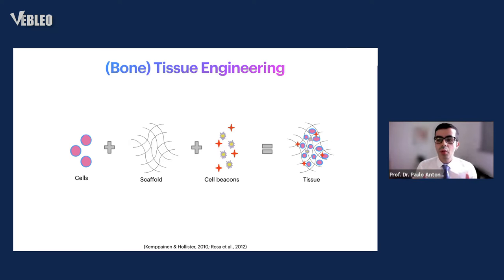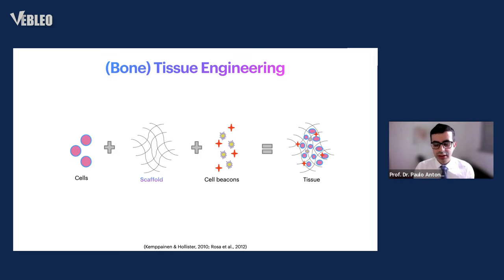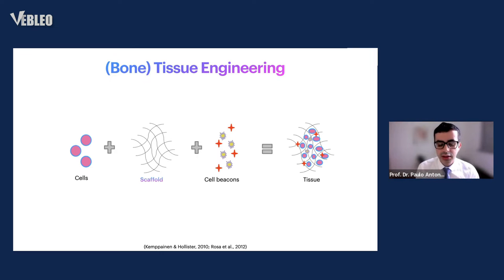In a simplistic way, to achieve bone tissue engineering or tissue repair and regeneration, we need three elements: cells, scaffolds, and signaling molecules. And where carbon nanotubes and graphene oxide fit in is as scaffolds. So I'll talk about them as scaffolds, showing some results of our research during the past 10 years, demonstrating how carbon nanotubes and graphene oxide can work as scaffolds for bone tissue engineering applications.